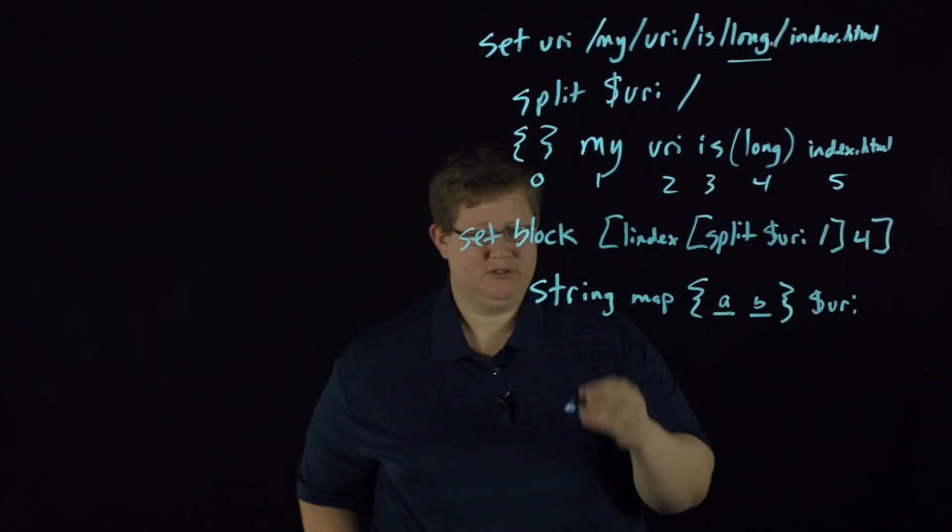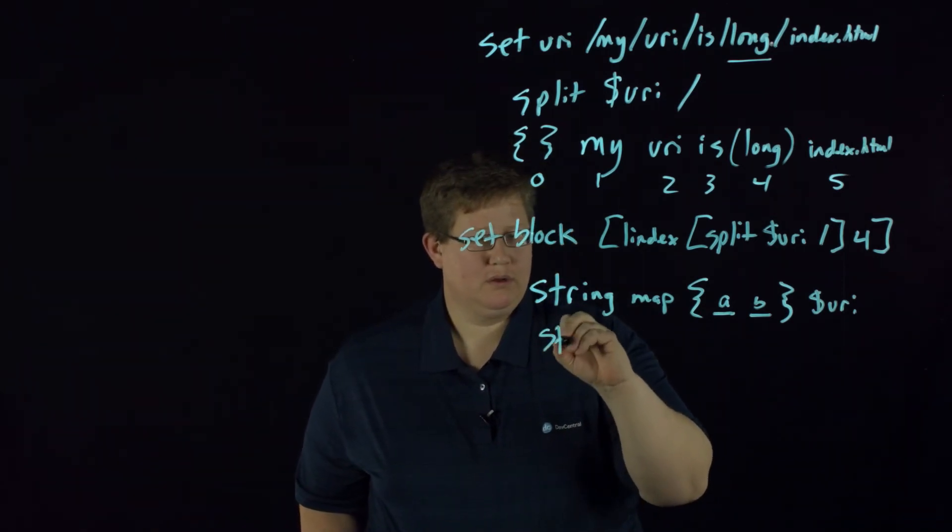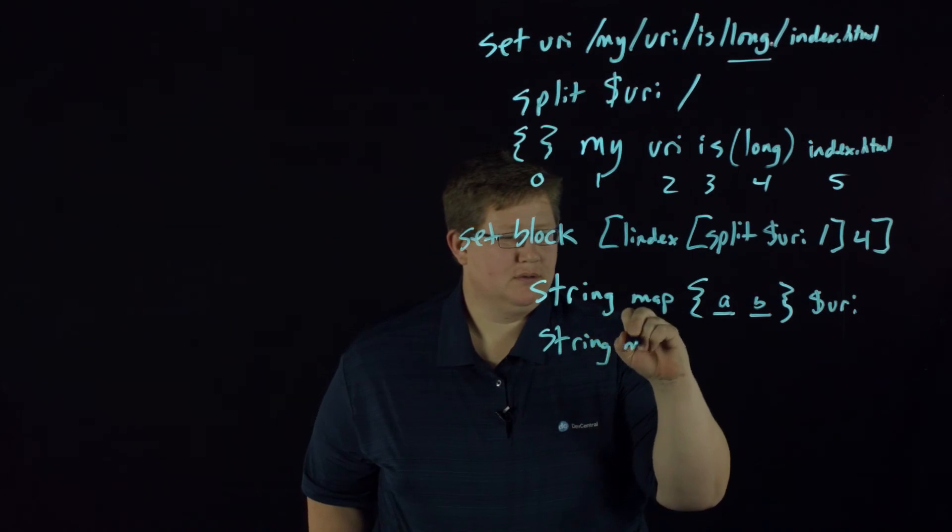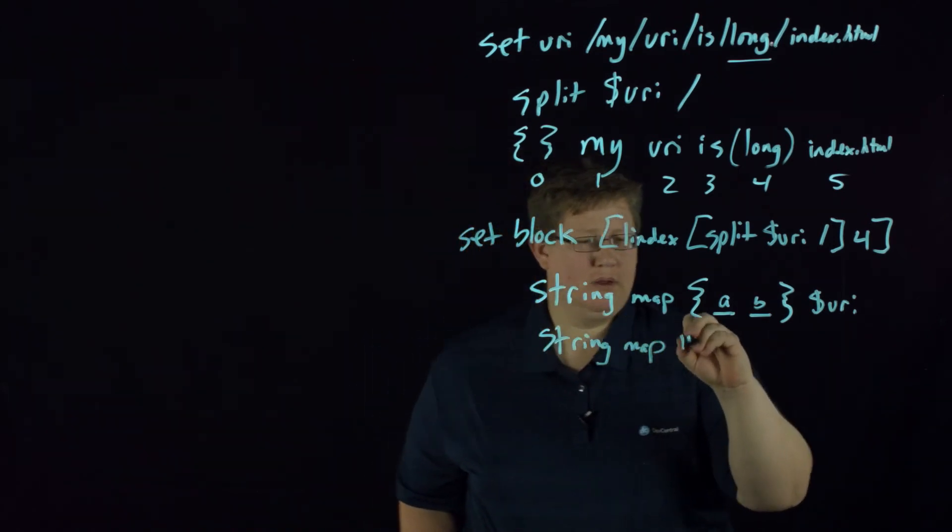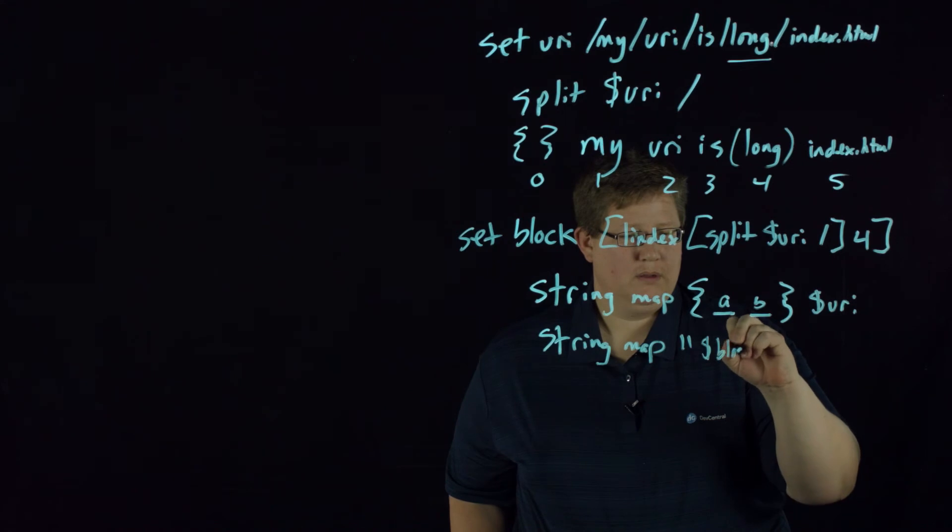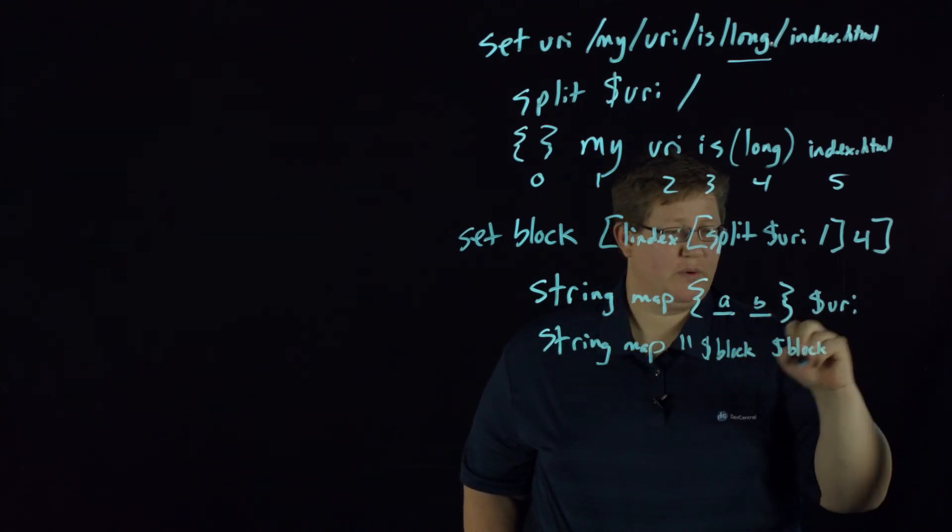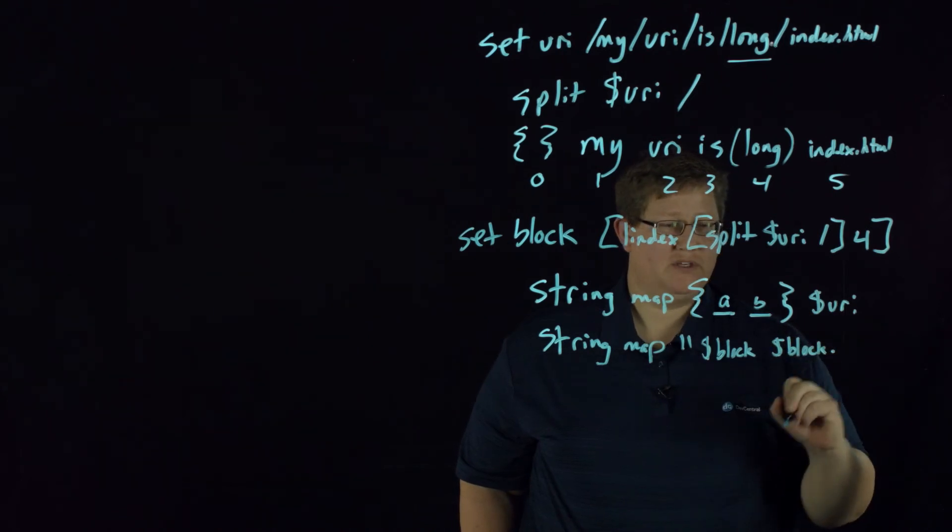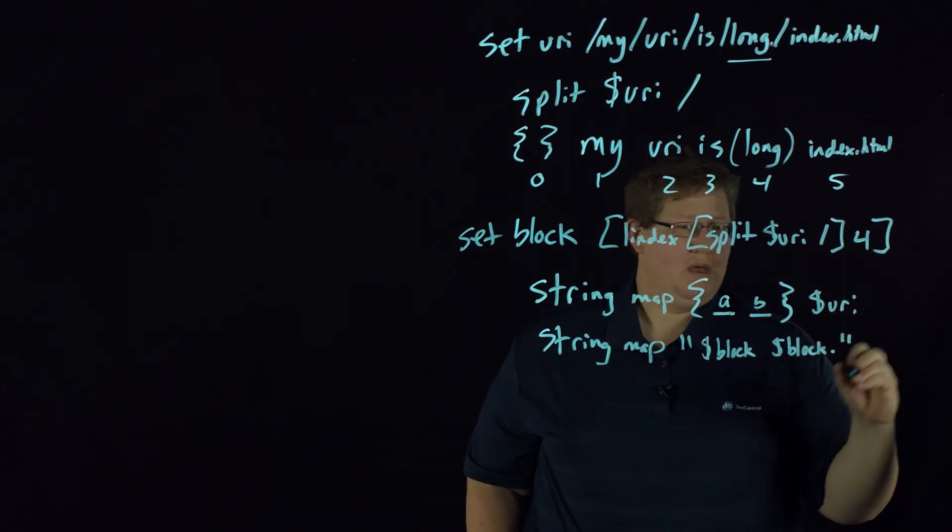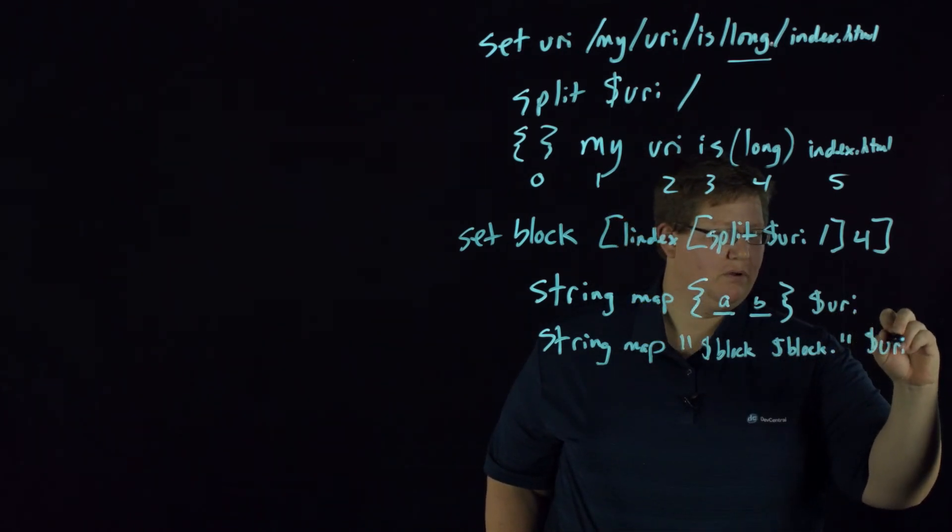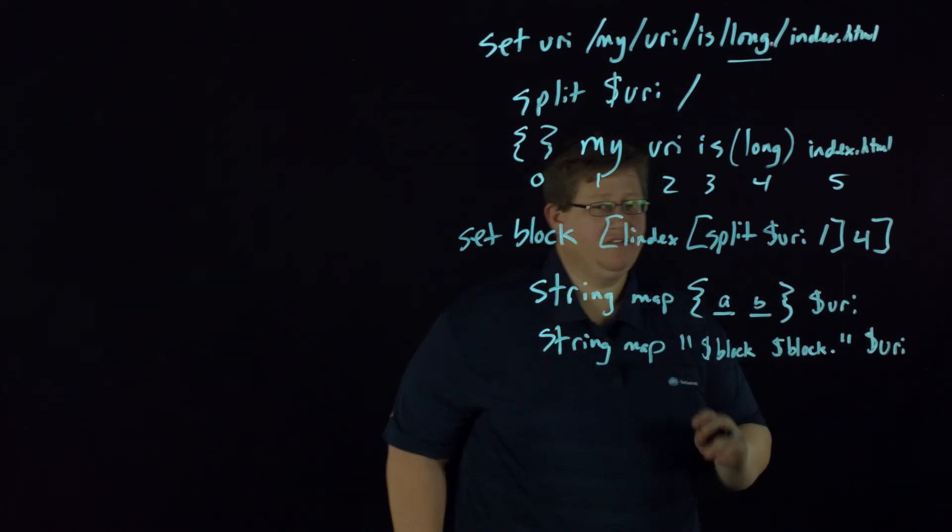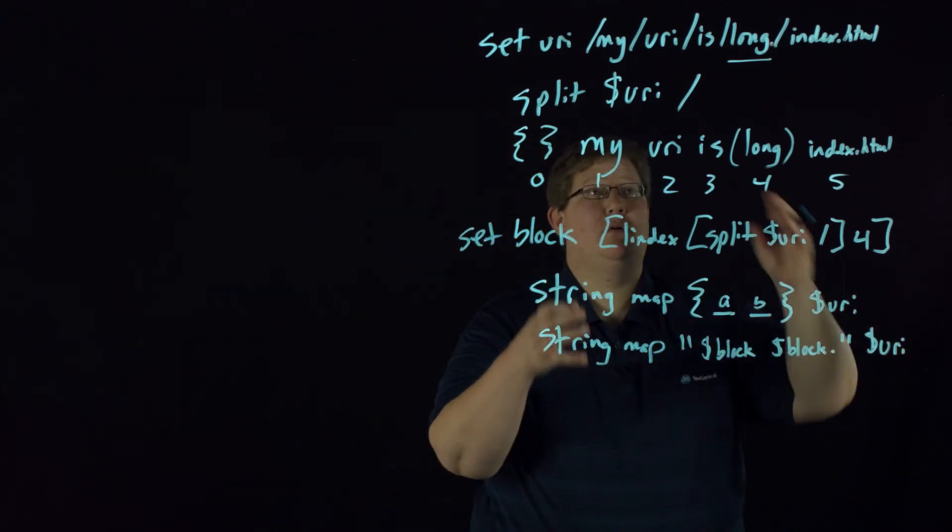There's two options. You can do string map and then quote block, and then we want the block again because we want to put the same thing back, but we just want to do it with a dot. And then our URI. In doing so, this will do exactly what we wanted to do—take the original URI and add a dot. That's one option.